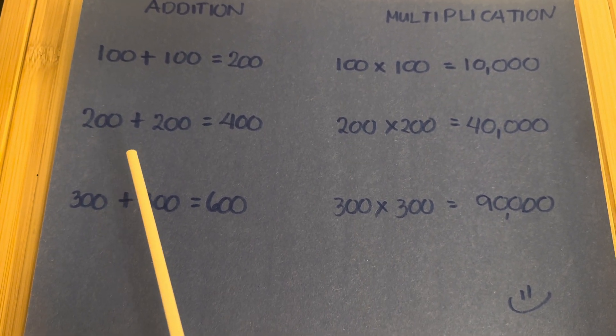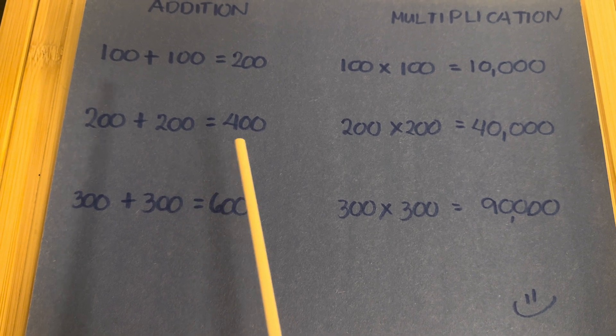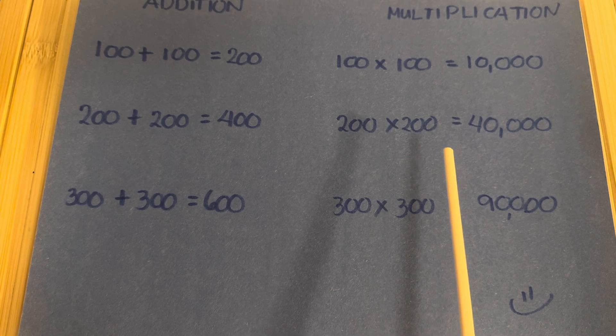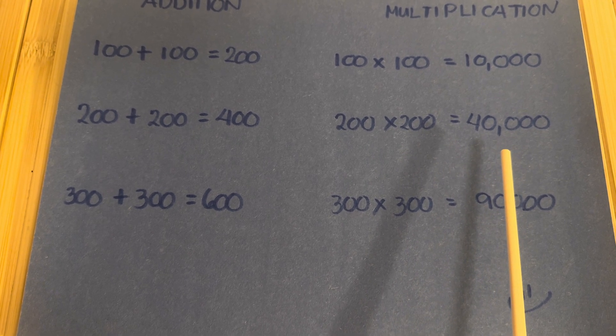Next, 200 plus 200 equals 400. In multiplication, 200 times 200 equals 40,000.